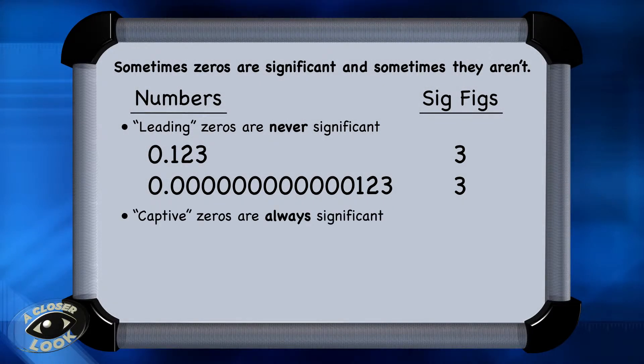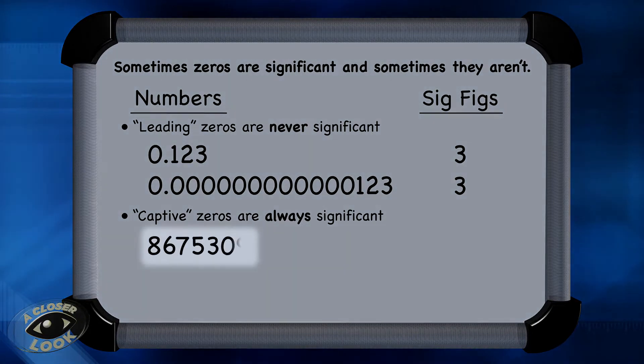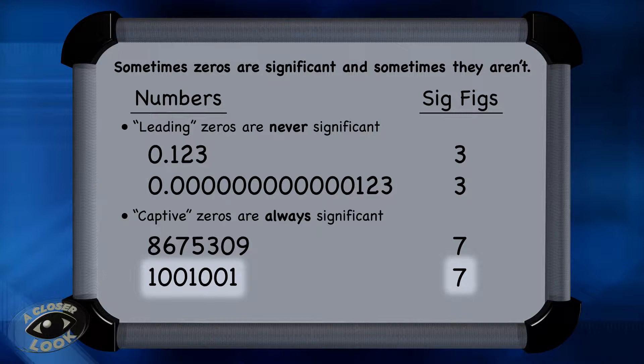Captive zeros are always considered significant. In other words, a zero is significant if it is captive between non-zero integers. So in this case, all seven numbers count as significant figures. And in this one, all four zeros are considered captive, so they are significant.